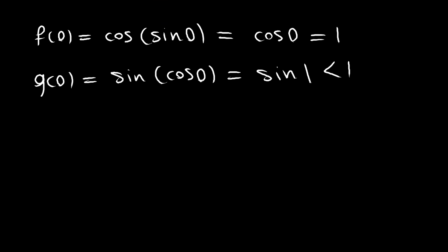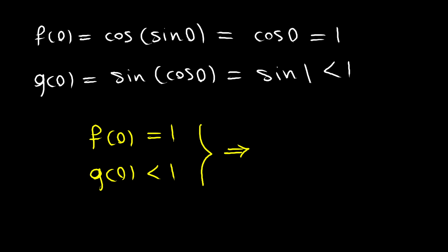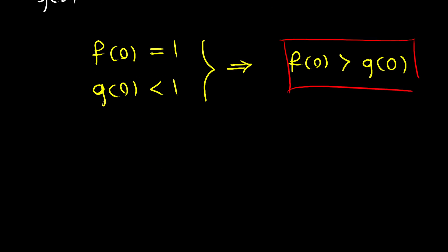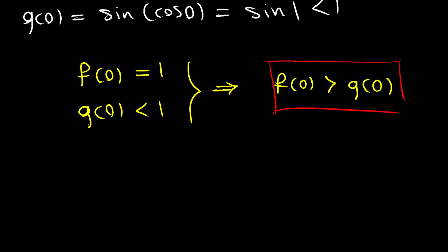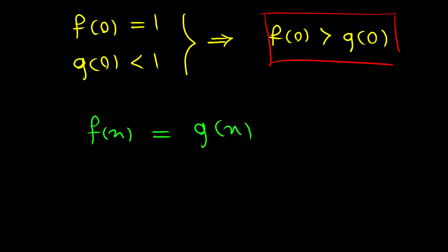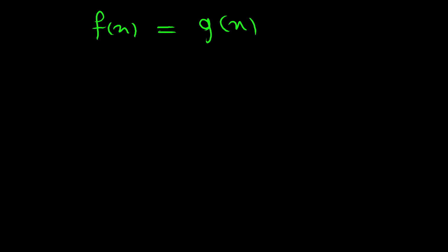So we have found that f of 0 is 1 and g of 0 is less than 1, which means f of 0 is greater than g of 0. Let's keep this in mind because it will be useful later on. Now let's go ahead and find the intersection points of these two functions. In order to do that, we need to set f of x equal to g of x.